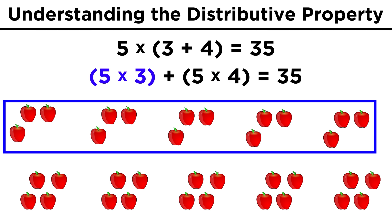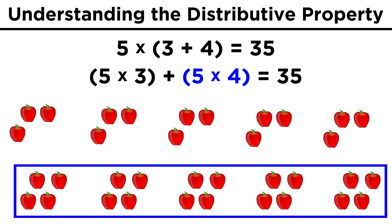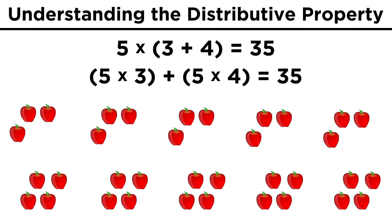But we could also say that we have five piles of three and five piles of four. That means five times three plus five times four. Visually we are just describing what we see, but mathematically we have just derived the distributive property.